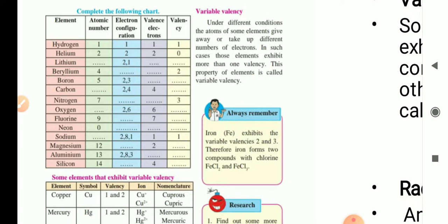Sodium: atomic number 11, configuration 2,8,1, valence electrons 1, valency 1. Magnesium: 12, electron configuration 2,8,2, valence electrons 2, valency 2. Aluminium: 13, configuration 2,8,3, valence electrons 3, valency 3. Silicon: 14, electron configuration 2,8,4, valence electrons 4, valency 4.